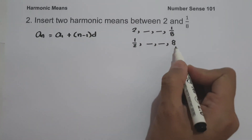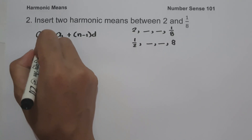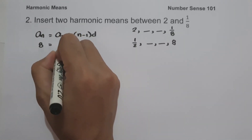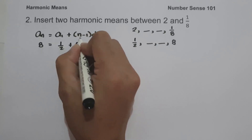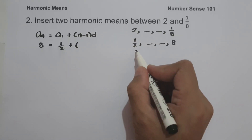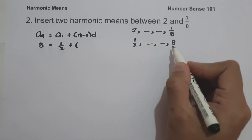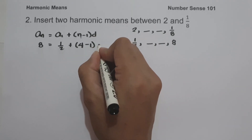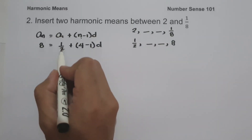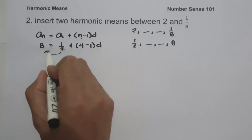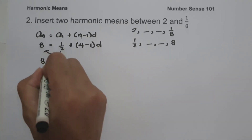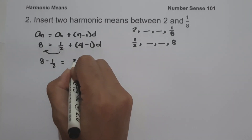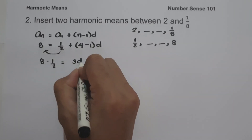Here, a sub n is 8, our last term, and a sub 1 is one half, our first term. Since we have 4 terms total, n equals 4. Moving one half to the other side: 8 minus one half equals 4 minus 1, that is 3, times d.